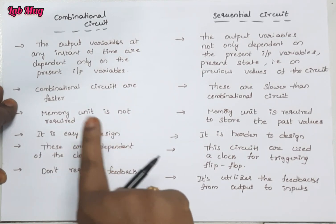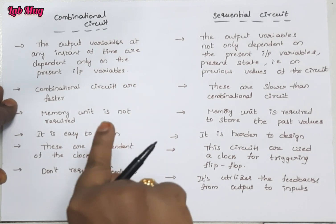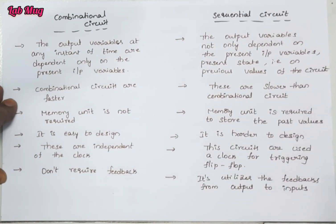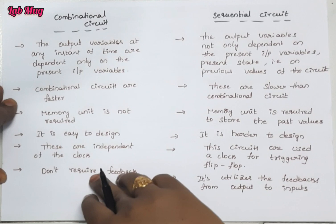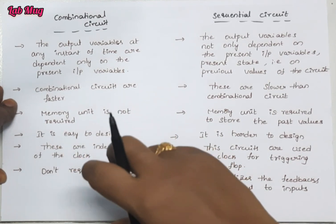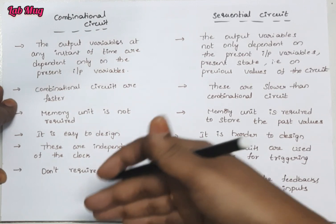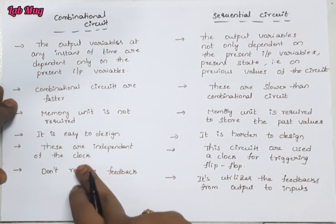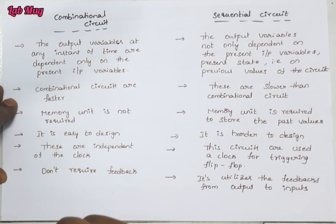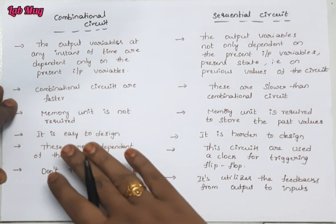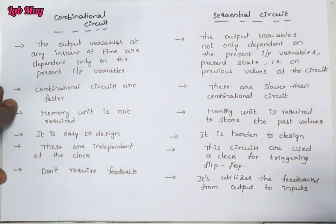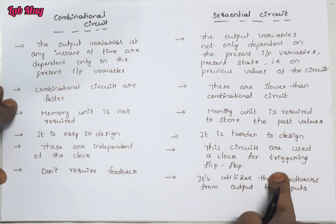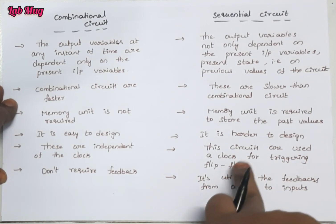Combinational circuits have no relation to the clock — this is a very important interview point. Sequential circuits use the concept of triggering, but combinational circuits don't use the triggering concept. Combinational circuits are independent of the clock, meaning they have no connection to the clock. We use combinational circuits independently. But in sequential circuits, we use the clock — triggering the flip-flops.